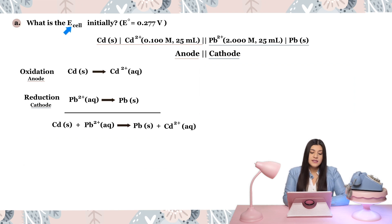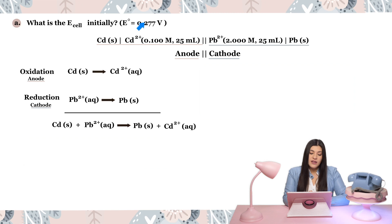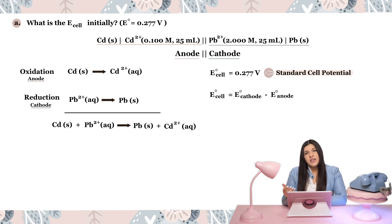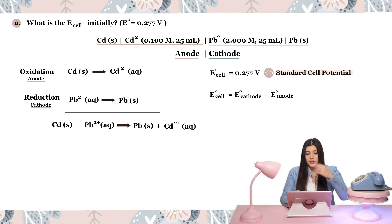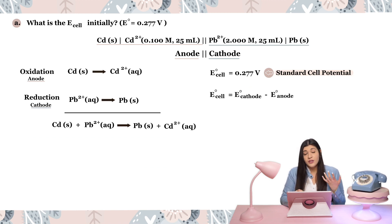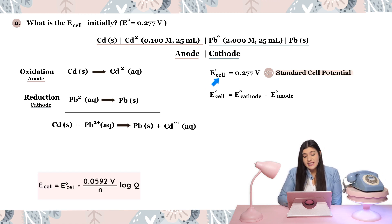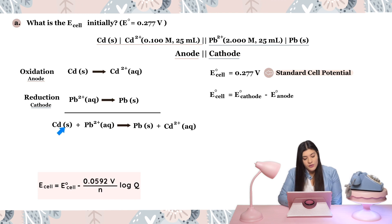This question is asking for the cell potential under non-standard conditions, since we don't have the degree symbol. E-naught is the standard cell potential. I'm given the standard cell potential — if you weren't given it, you'd find it by taking the cell potential of the cathode and subtracting the cell potential of the anode. Since I have that, I need to use the Nernst equation. My first step is to figure out how many electrons are being transferred — that's what N refers to.